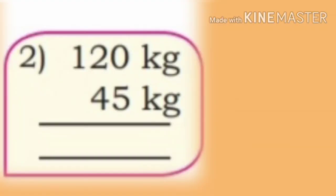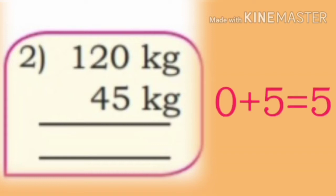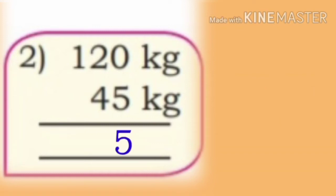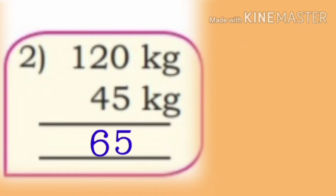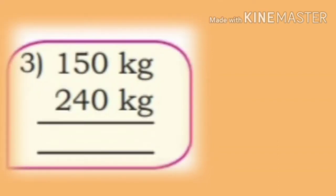Second one: 120 kg plus 45 kg. 0 plus 5 is 5 — write in units place. Now add tens place: 2 plus 4 is 6 — write in tens place. Now 1 write as it is. So answer is 165 kg.